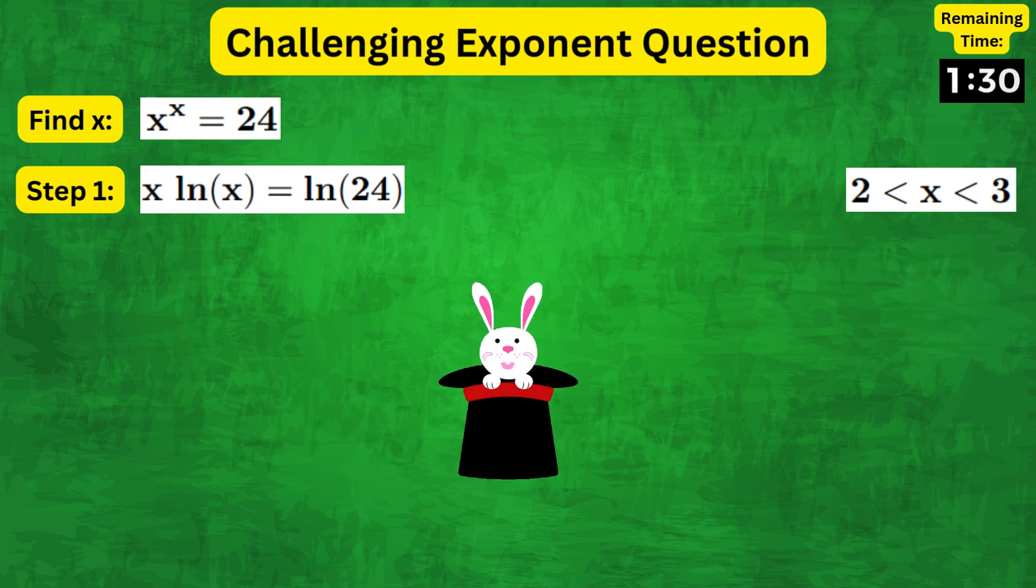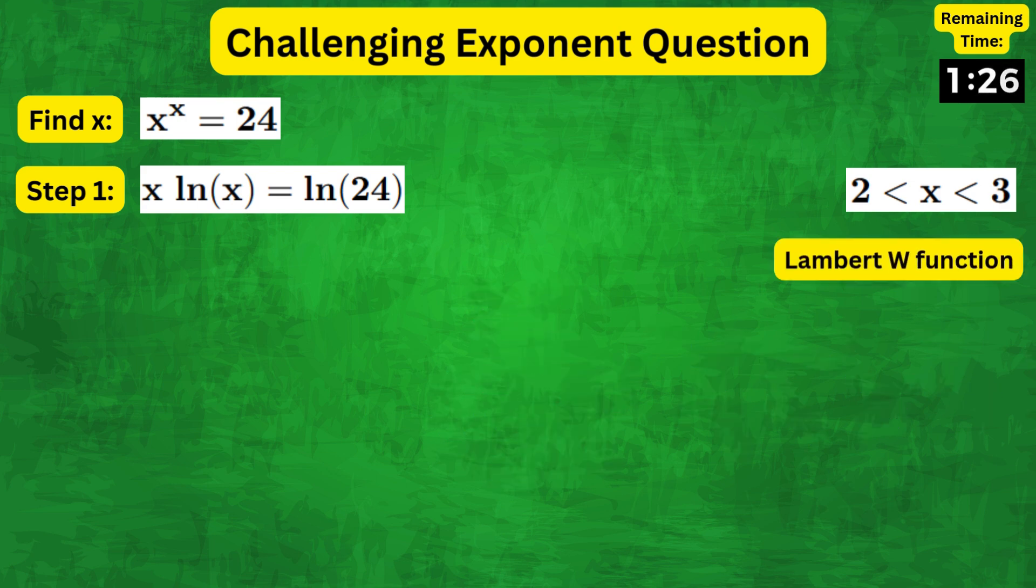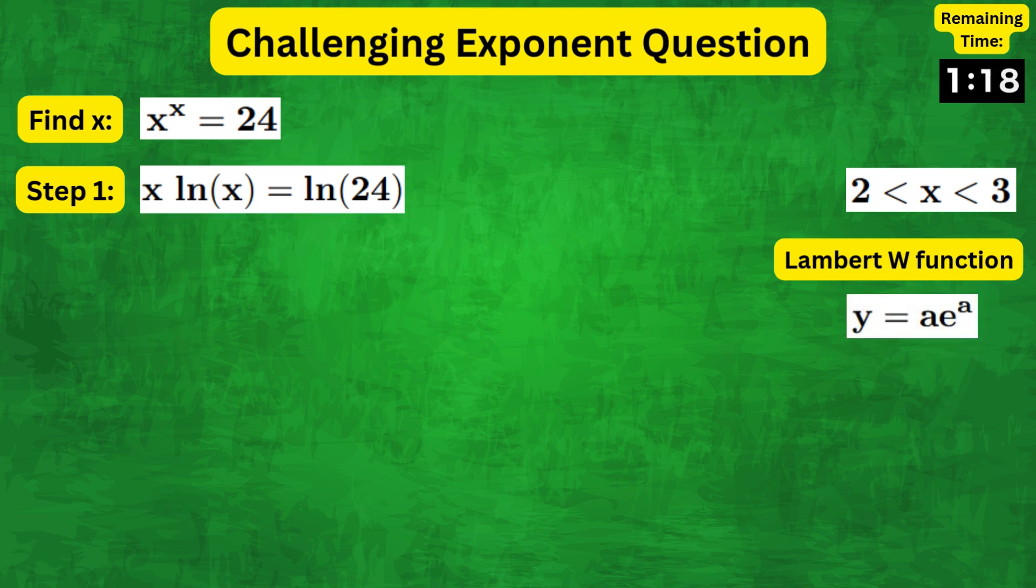Now here's the trick: we need to use something called the Lambert W function to solve this equation. Lambert W function is such that applying it to the expression ae to the a simply results in a.